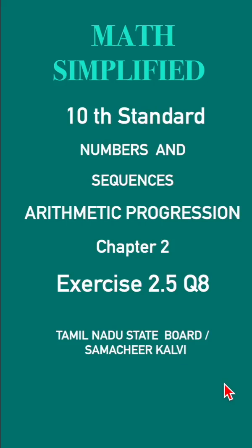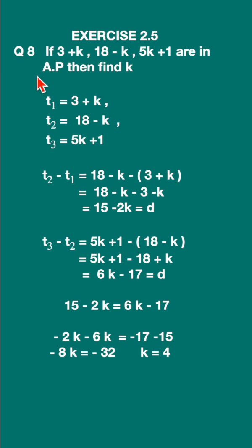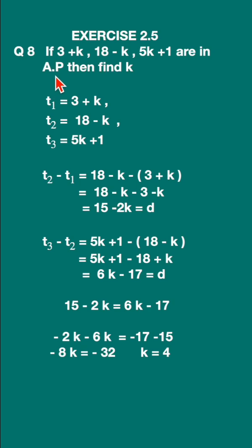Exercise 2.5, question 8. If (3+k), (18-k), (5k+1) are in an AP, then find k. AP means arithmetic progression, so these are three terms.